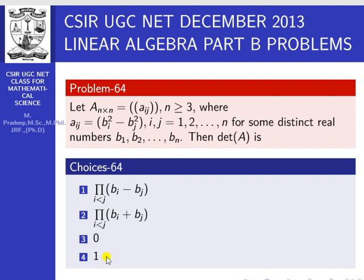First of all, how to approach this problem. We want to find out the determinant of A. We are given that aij equals bi squared minus bj squared. That is the given idea — we want to find out the determinant of A. b1, b2, and bn are distinct real numbers.